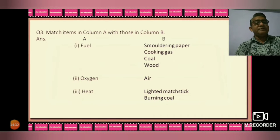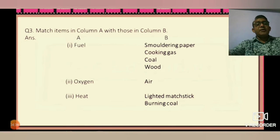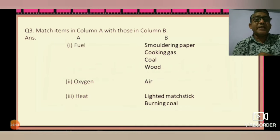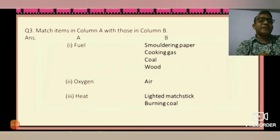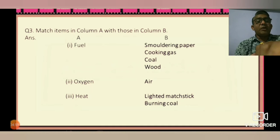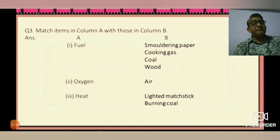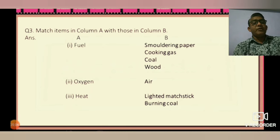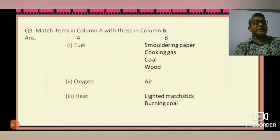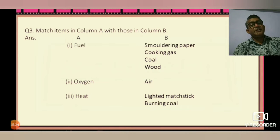Question 3: Match items in Column A with those in Column B. Column A contains fuels: paper, cooking gas, coal, and wood. Column B contains: fuel and air — oxygen is a kind of air. Heat examples include a lighted match and burning coal.